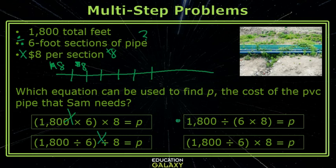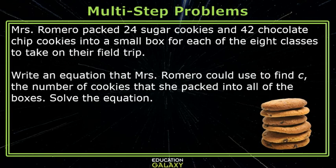Let's look at the remaining two. The only difference is the parentheses. I first have to divide by 6 to get the number of sections, so the correct answer is: (1,800 ÷ 6) × 8. You get the number of sections from the division, then multiply by 8 to get the cost.